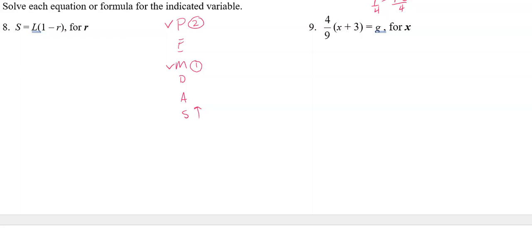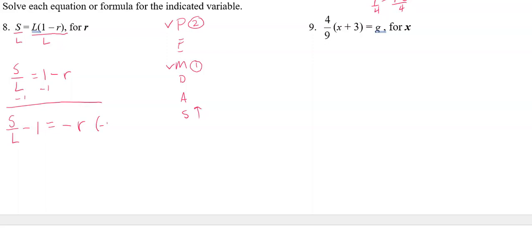I undo multiplication with division — I'm multiplying by L, so I divide by L on both sides. Now I don't have parentheses anymore. I have plus one that I need to undo by subtracting one from both sides, giving S/L − 1 = −R. To get positive R, I multiply or divide both sides by negative one, making the fraction −S/L + 1 become positive R. That's my answer for number eight.